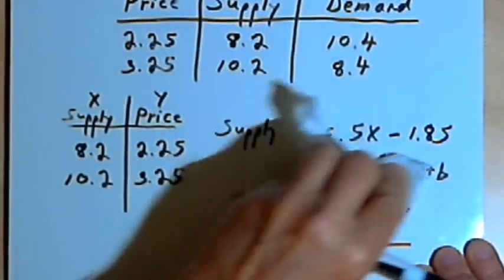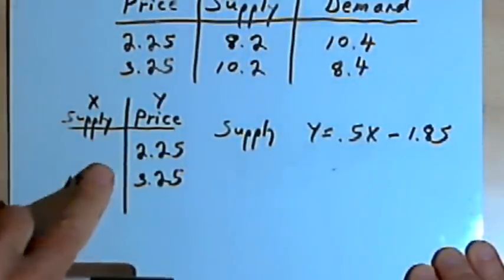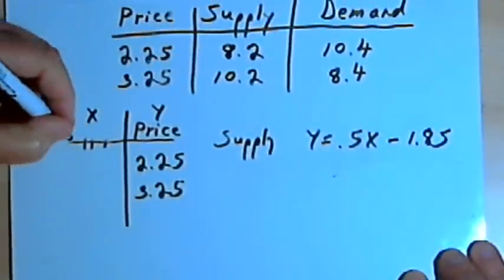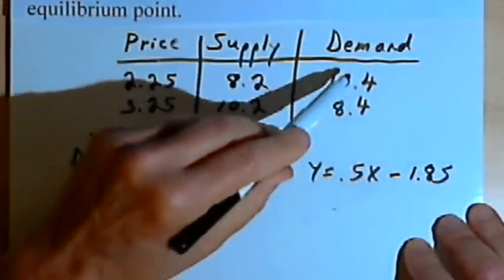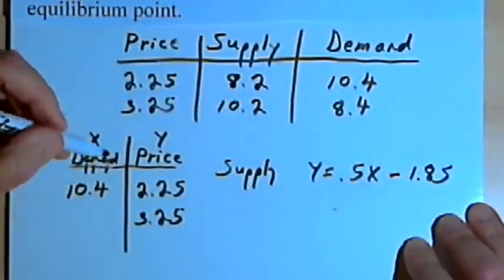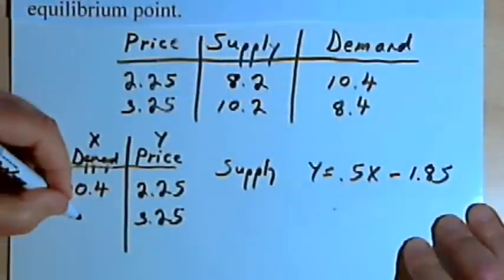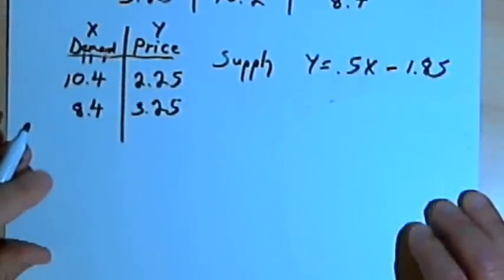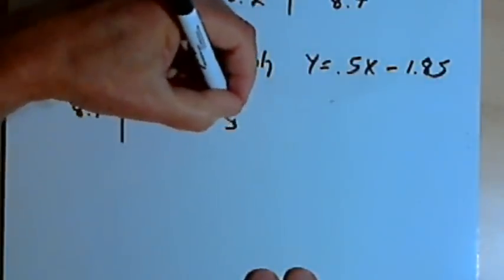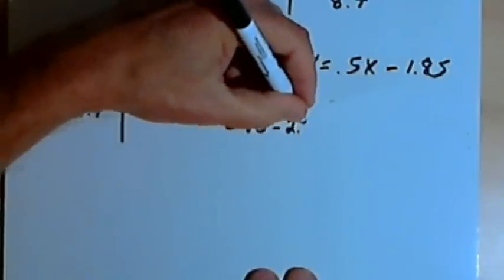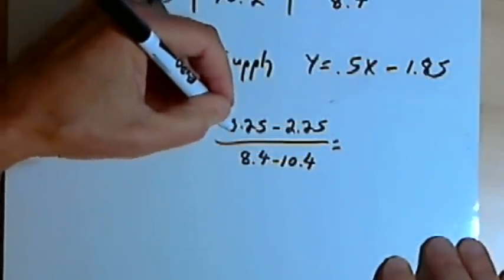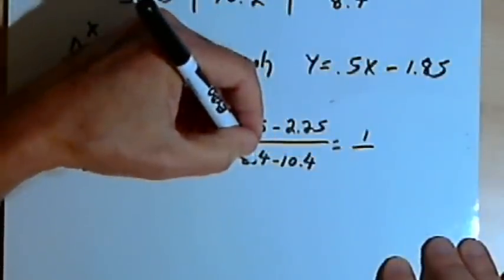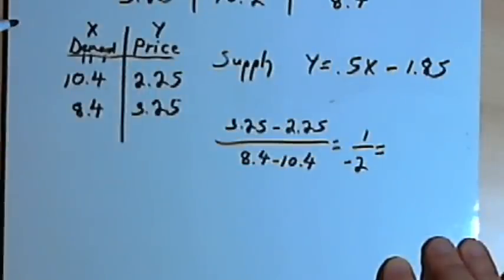Now let's use the demand information for the price-demand function. In the x column I want the demand information. When the price was 2.25, that equated to a demand of 10.4, and when the price was 3.25, that equated to a demand of 8.4. Finding the slope: 3.25 minus 2.25 over 8.4 minus 10.4 gives 1 over negative 2, so the slope is negative 0.5.